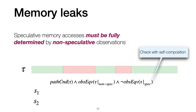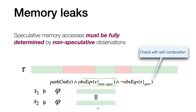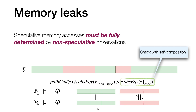The formula states that we are looking for two program states such that: first, they both satisfy the path condition — that is, they are both represented by the symbolic trace; next, the non-speculative observations produced by the two states are the same, obtained by requiring that the green observations are the same for the two states; and finally, we require that the observations produced during speculative execution are different, obtained by requiring that the red observations differ in the two states. So, if this formula is satisfied, we have a counterexample to speculative non-interference, and therefore we found the leak.